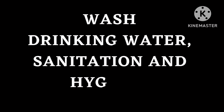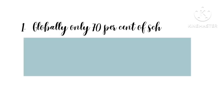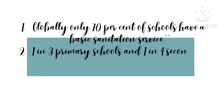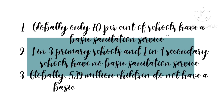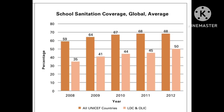WASH — drinking water, sanitation, and hygiene — is a term used to represent the global campaigns of sanitation and hygiene. According to UNICEF, globally only 70% of schools have a basic sanitation service. One in three primary schools and one in four secondary schools have no basic sanitation service. Globally, 539 million children do not have a basic sanitation service at school. These are statistics from 2008 to 2012.